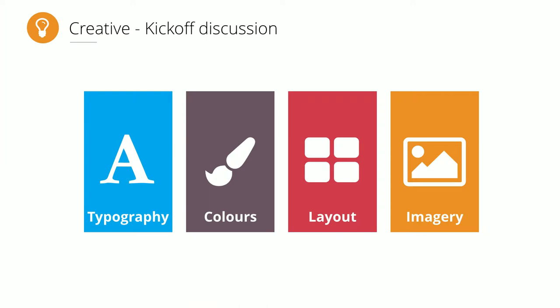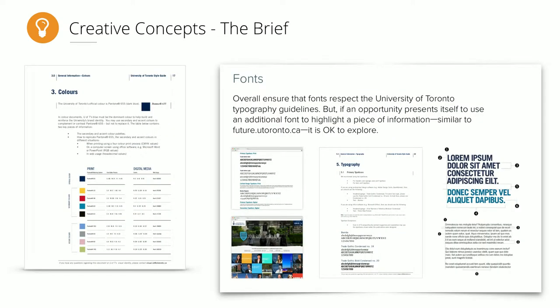Here are two examples from our project. U of T has brand standards that outline colors — a primary palette of blue and a secondary palette that almost no U of T websites actually use. We made a group decision: we don't want a heavy blue website, but we do want to stay within U of T brand standards. So we chose to explore making the seven secondary colors almost equal weight to the primary colors, giving a unique look while still within brand standards.